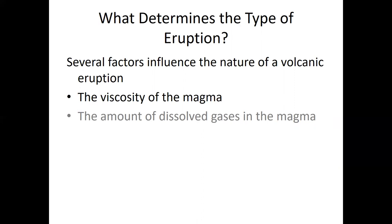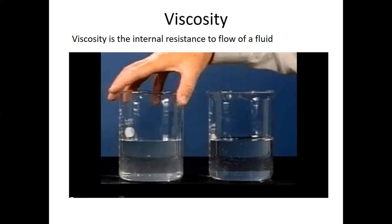What determines whether an eruption is violent like Mount St. Helens or peaceful like Kilauea? Two key factors are the viscosity of the magma and the amount of dissolved gases in the magma. Viscosity is the internal resistance to flow of a fluid. High viscosity means large resistance to flow — the fluid is thick. Low viscosity means the fluid flows very easily with small resistance.